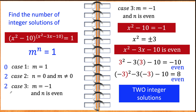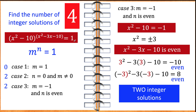That gives us a total of four integer solutions for this problem. Our answer is four — there are four integer solutions for the quantity x squared minus 10 raised to the quantity x squared minus 3x minus 10 equals 1. And we are done.